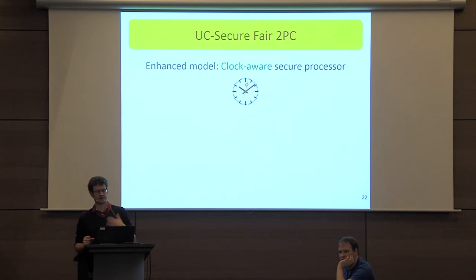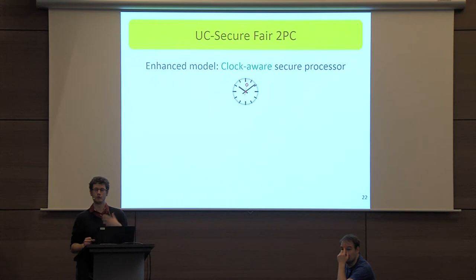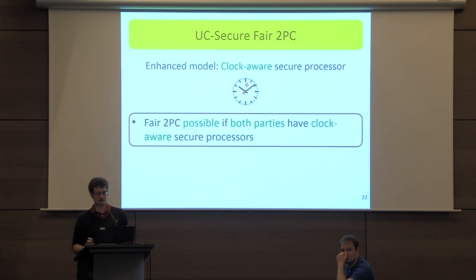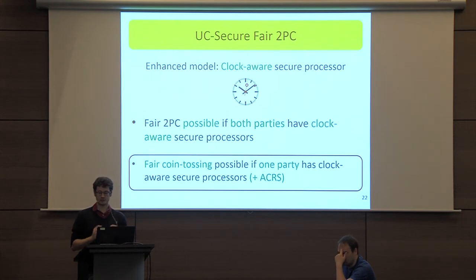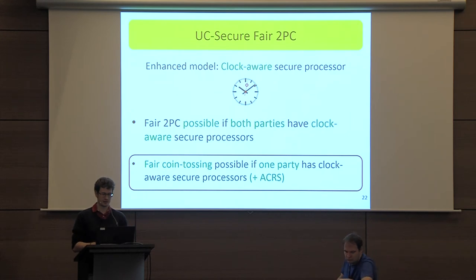For this, we consider a so-called clock-aware secure processor — a piece of trusted hardware that has access to a source of relative trusted time. We can show that assuming both parties have such secure processors, we can get fairness for general two-party computations. Again, if one of the two parties doesn't have a secure processor, things break down. But we can show that for specific functionalities, such as coin tossing, we can get fairness even when a single party has a secure processor and we also have the augmented common reference string.